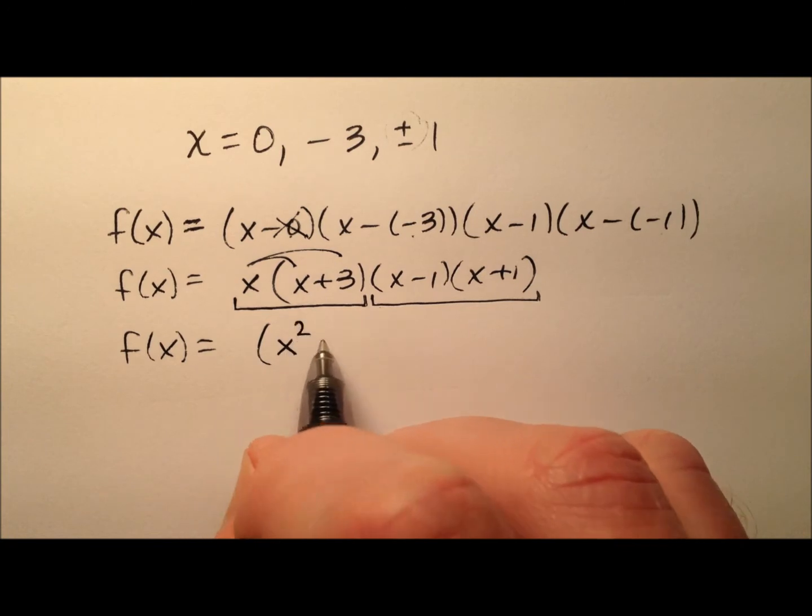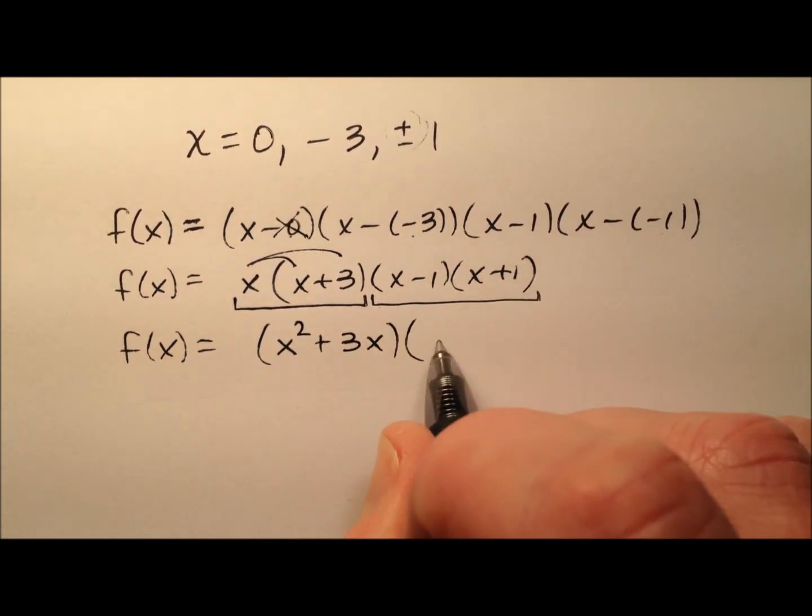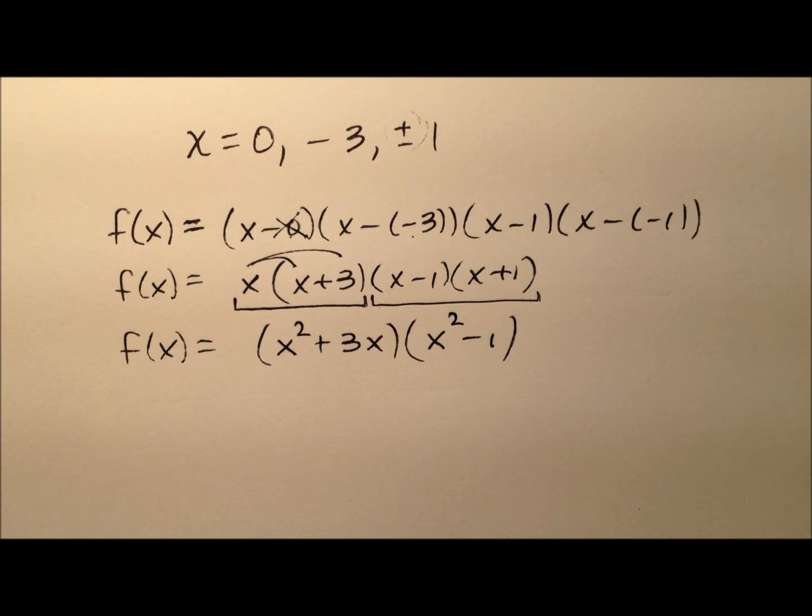So I'll end up with x squared plus 3x, and then for my difference of squares, x squared minus 1.